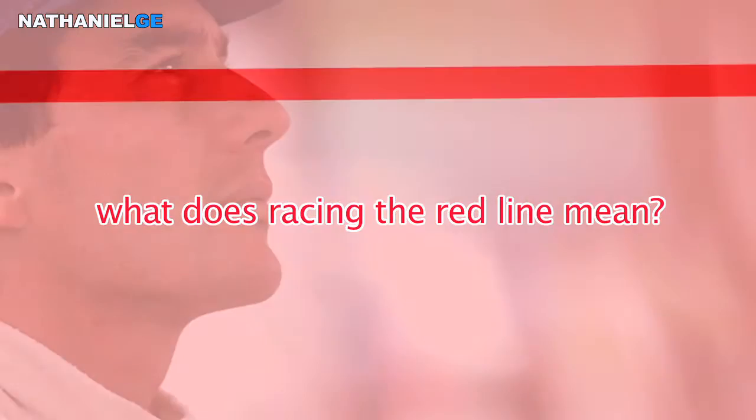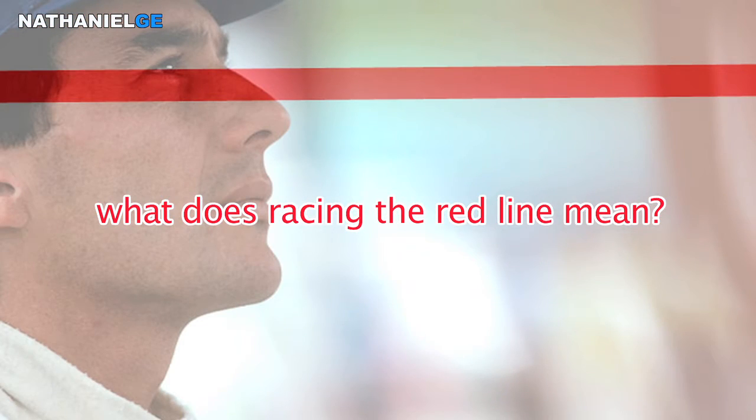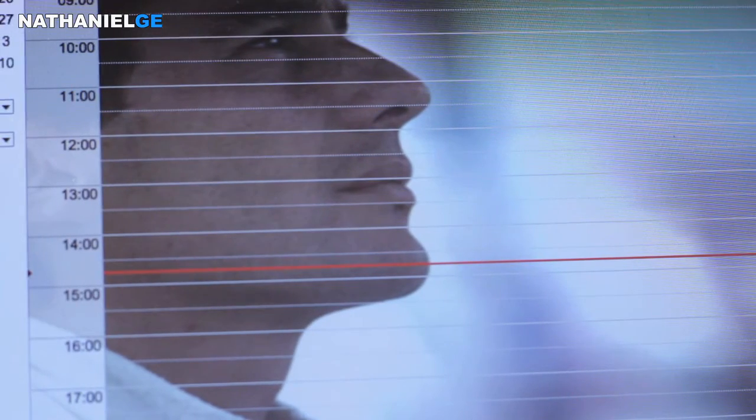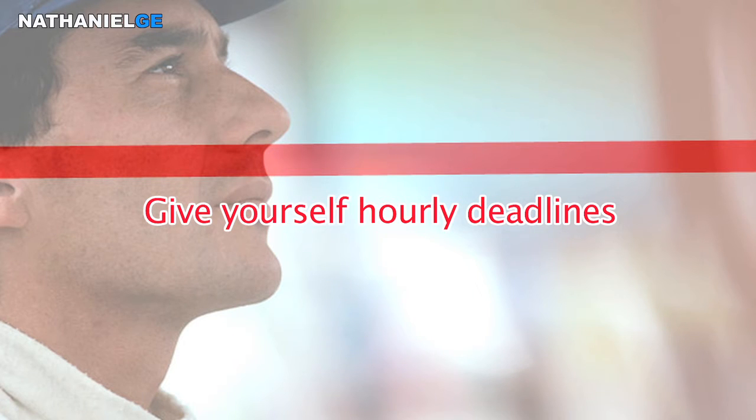So why did I call it 'racing the red line'? When you open Google Calendar in the day mode or the two-day mode, you get this red line on the screen. The line shows you where you are in the day at that moment compared to the whole day. I call it racing the red line because it feels like a challenge — red is like danger, like your time is running out. You can set yourself challenges for the day.